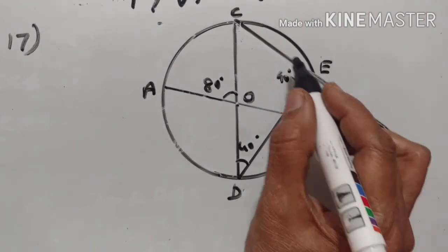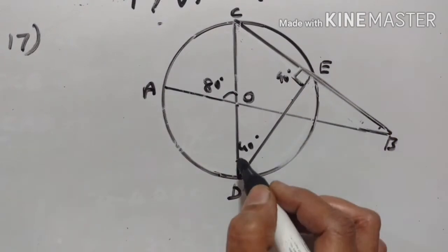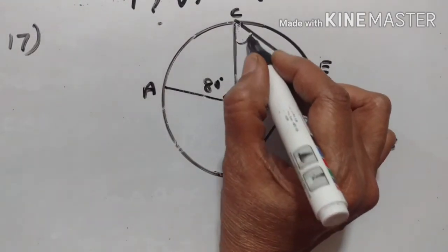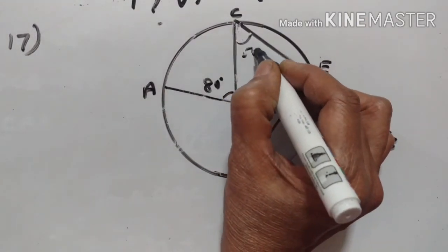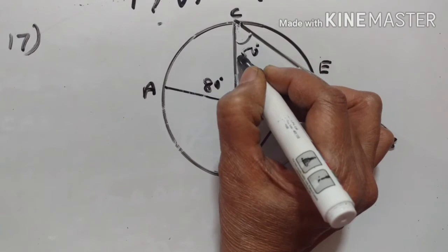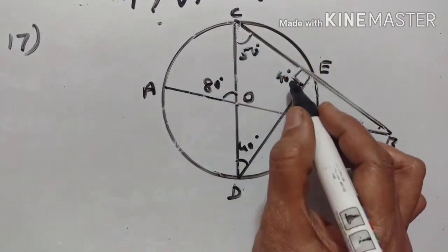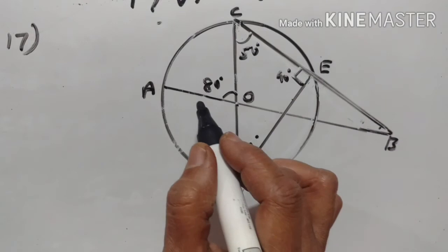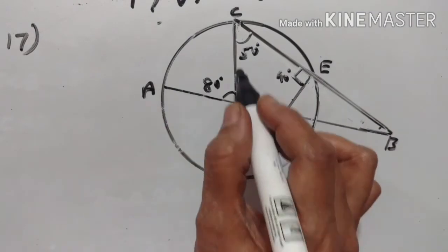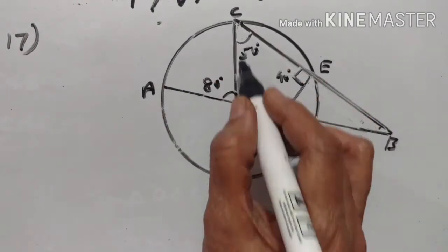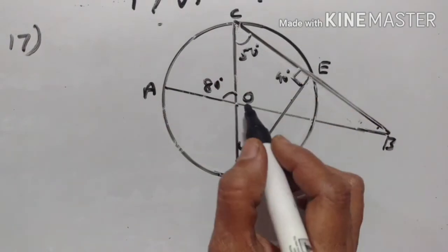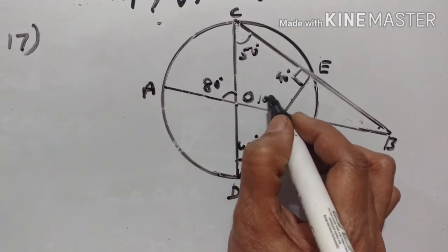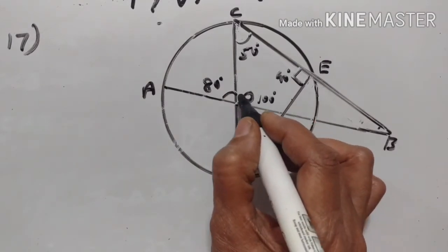Angle ECD plus angle EDC is equal to 90 degrees, so angle ECD is 50 degrees. 50 plus 40 plus 90 equals 180 — angle sum property. Now angle AOC is equal to 80 degrees, so angle COB is equal to 180 minus 80, which is 100 degrees — linear pair.